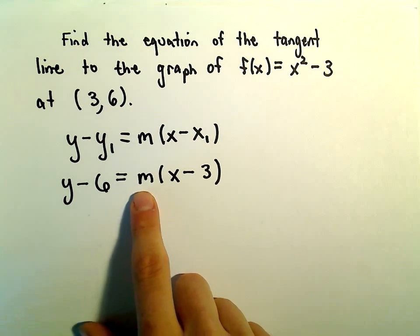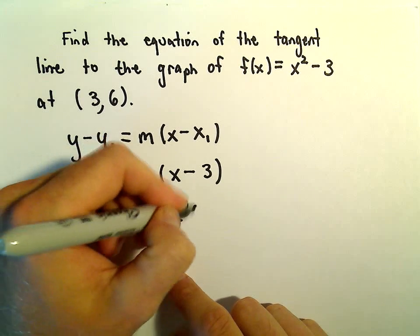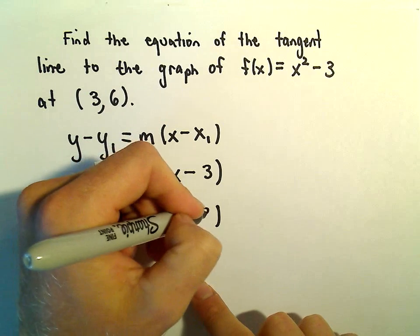And then I'm going to plug in 3 for my x sub 1 value. Now, the only thing we have to figure out is the slope. But to find the slope, we just take the derivative. And all we have to do is plug in the x-coordinate, which in this case is going to be 3.